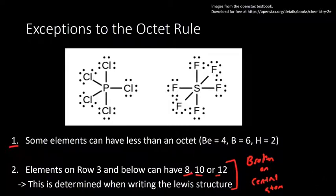For example, here we have phosphorus, and it has 10 electrons. So that phosphorus — that central atom — is breaking the octet rule; it has 10 electrons, and that's the correct structure. Chlorine can actually break the octet rule too, but it's the terminal atom, so we're not going to break the octet rule there — you break it on the central atom. Sulfur over here has 12 total electrons. So there we break the octet rule again — 12 total electrons on that central atom.